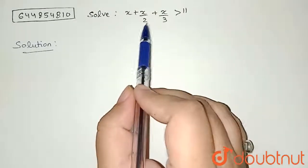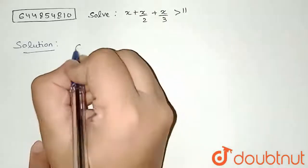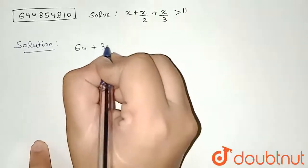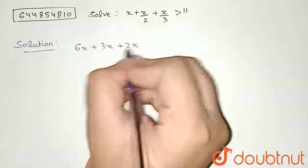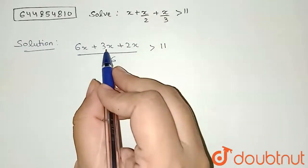take the LCM. We can see here 2 and here 3, so my LCM will come out to be 6. So I can write 6x plus 3x plus 2x divided by 6 greater than 11. So 6x plus 3x